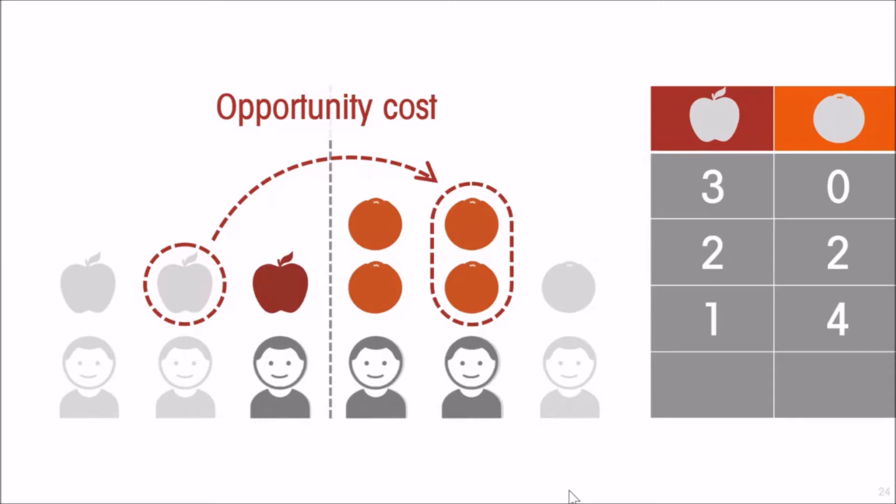If those resources had been devoted to apples instead of oranges, the opportunity cost of the two oranges is an apple. And similarly, the opportunity cost of an apple is two oranges.